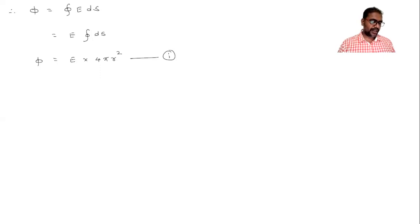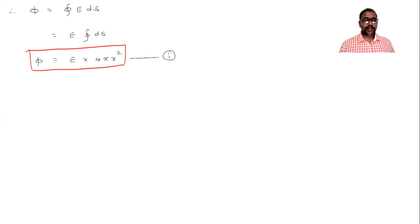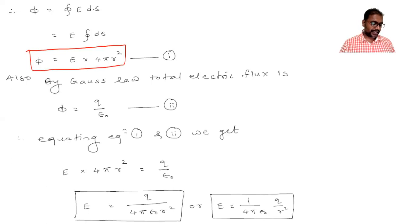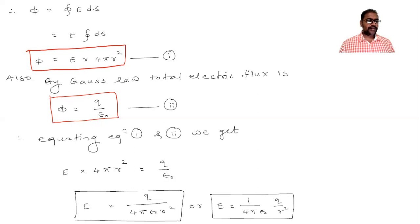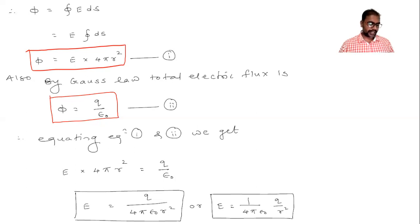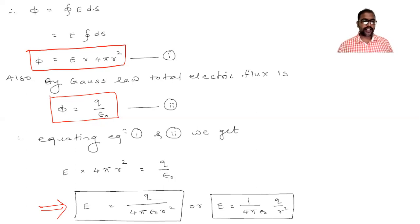The Gaussian sphere has radius small r, so its surface area is 4πr². This gives electric flux as E × 4πr² — this is equation 1. By Gauss's law, electric flux equals Q/ε₀ — this is equation 2. Equating equations 1 and 2, we obtain the expression for electric intensity near a charged sphere.